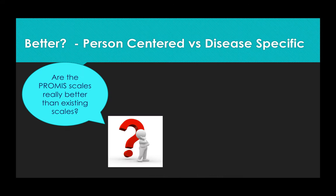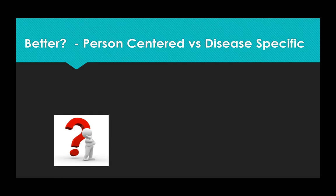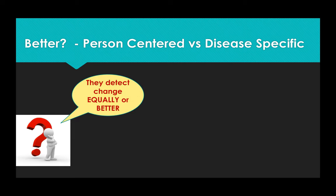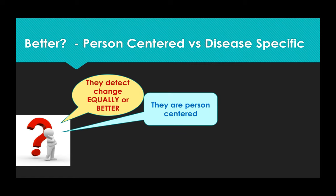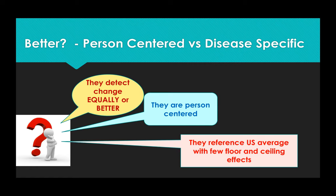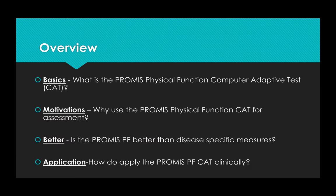So, the answer then is that the PROMIS Physical Function Computer Adaptive Test detect change equally as well or better than current disease-specific scales. They are person-centered and they provide a reference with few floor and ceiling effects across a wide spectrum of diagnoses. All of this was hard to imagine a few years ago. So, we've now reviewed some basics, motivations, and how the PROMIS Physical Function measure compares to some measures we might be familiar with.